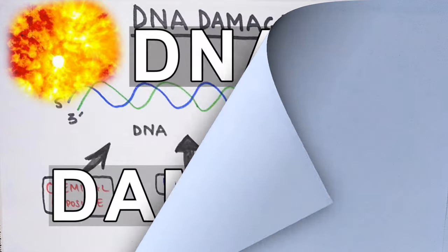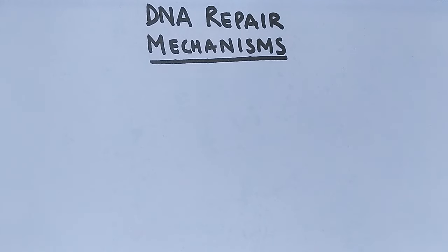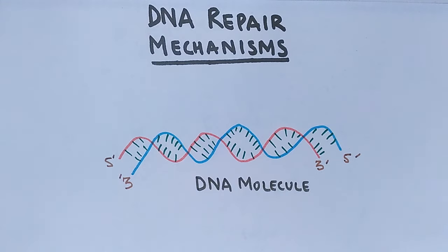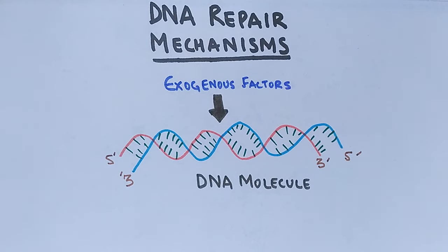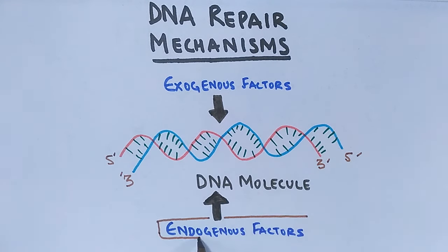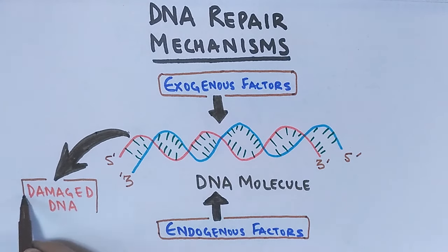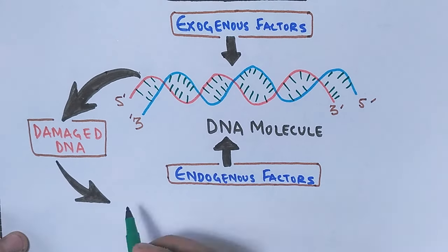Until now we have seen the lecture on DNA damage and also discussed DNA oxidation — how DNA gets oxidized. Now it's time to get into DNA repair mechanisms. As you can see in this diagram, we have a normal DNA molecule with two strands, 5' to 3' and 3' to 5', running opposite to each other. This DNA molecule can be damaged by exogenous (external) factors or by endogenous factors like replication errors. Both exogenous and endogenous factors can damage DNA, and when damaged DNA is present within the cell, the cell kicks in DNA repair mechanisms.